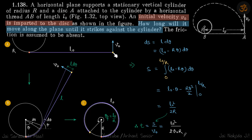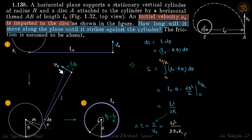This thread will always be perpendicular to the velocity and will always form a tangent to the circle. After some time, it looks like this — it has already wrapped around to an angle theta, and as discussed it still forms the tangent, moving perpendicular to the thread with velocity v0.